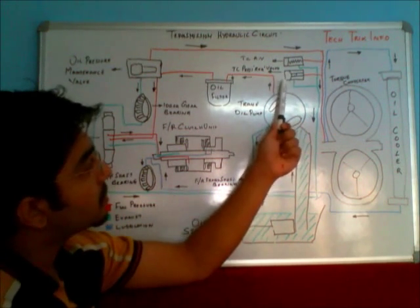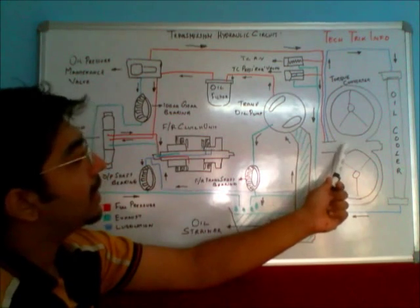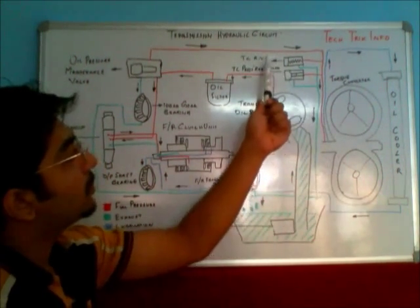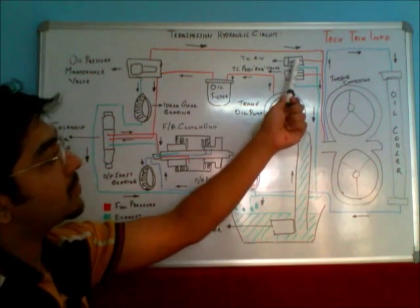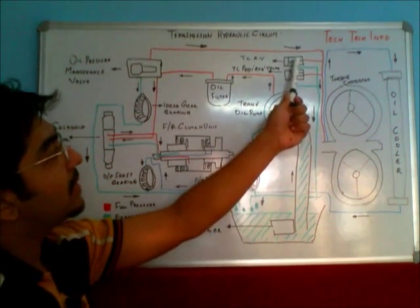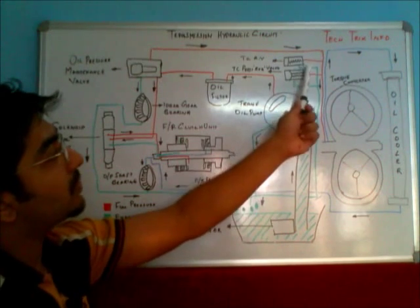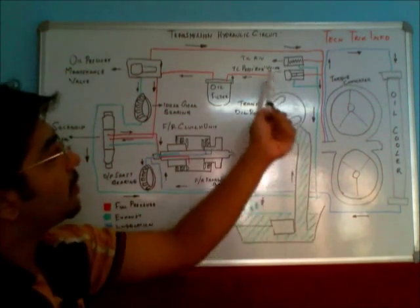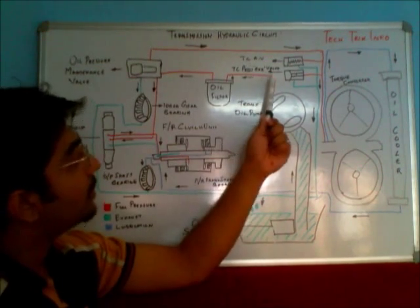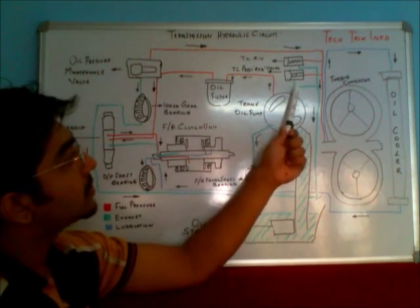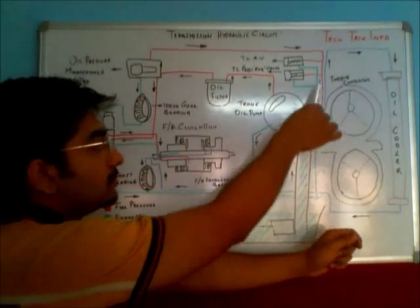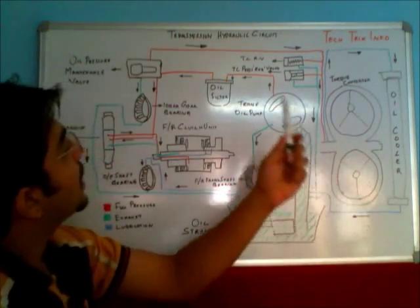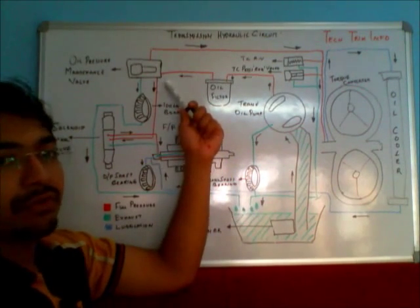From the oil pressure maintenance valve, one flow is diverted towards the torque converter. It first reaches the torque converter relief valve, then the torque converter pressure regulating valve, and finally goes toward the torque converter for its functioning. The relief valve relieves excess pressure, and through the return line — shown in green — it goes back towards the strainer. The pressure regulating valve also has a return line going towards the tank.